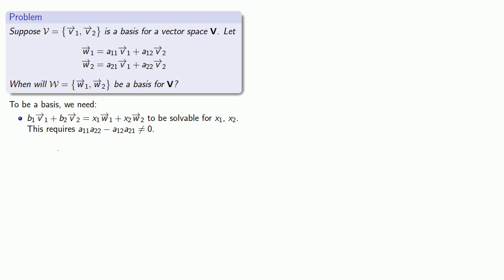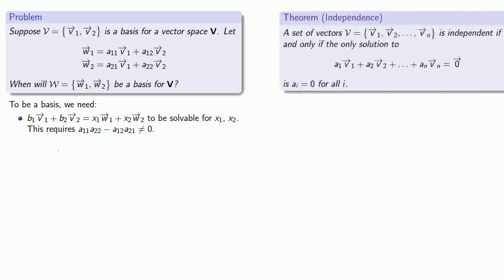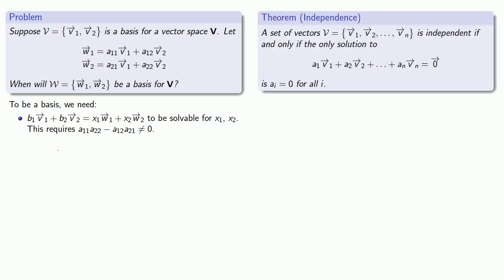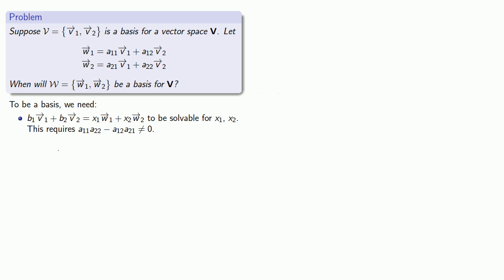Remember there's a theorem that says that a set of vectors will be independent if and only if the only linear combination equal to the 0 vector is the trivial linear combination. And so we want to make sure that the only solution to linear combination of the W vectors equals the 0 vectors is to have X1 and X2 both equal to 0. So we'll set up a system of equations.